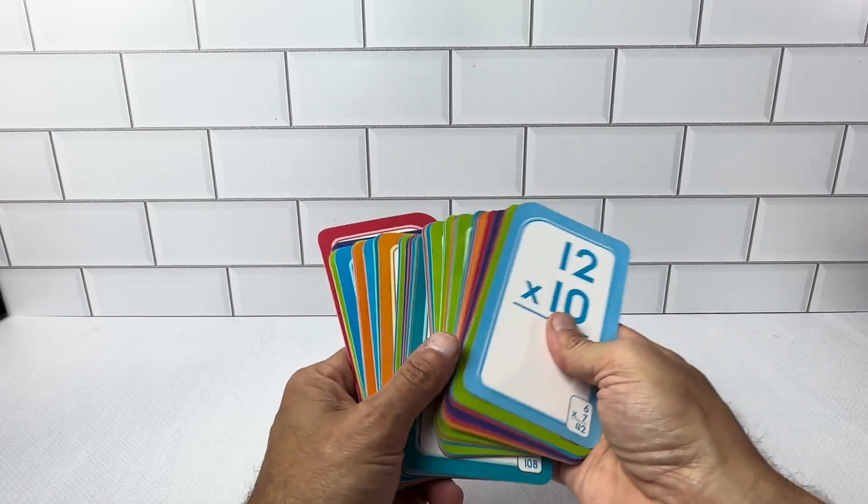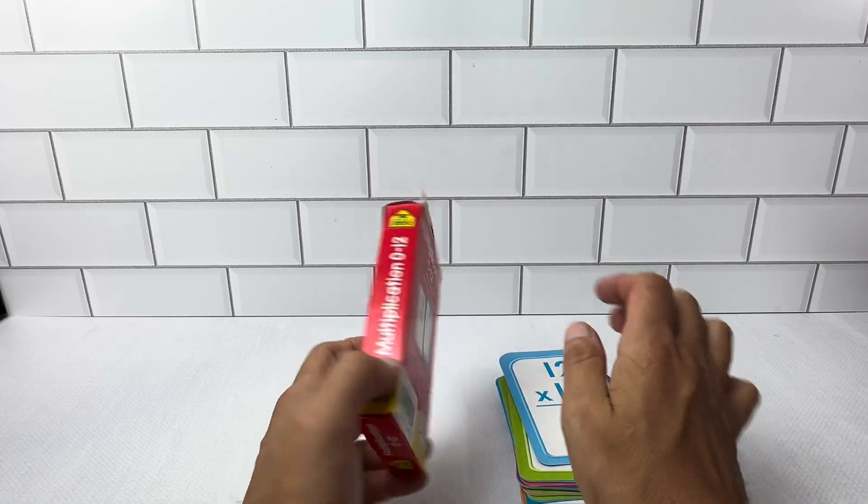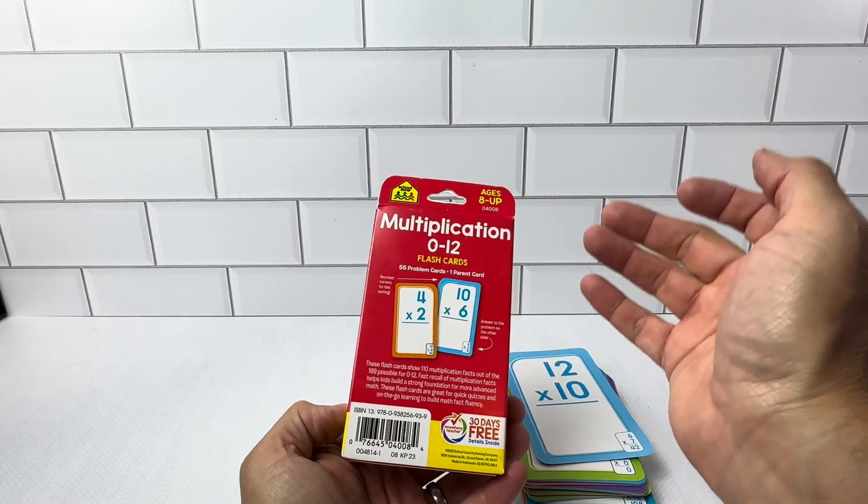But we're very happy with these. They have 55 cards right here, both double-sided. So you have everything you need on here. It goes all the way from 0 all the way up to 12.